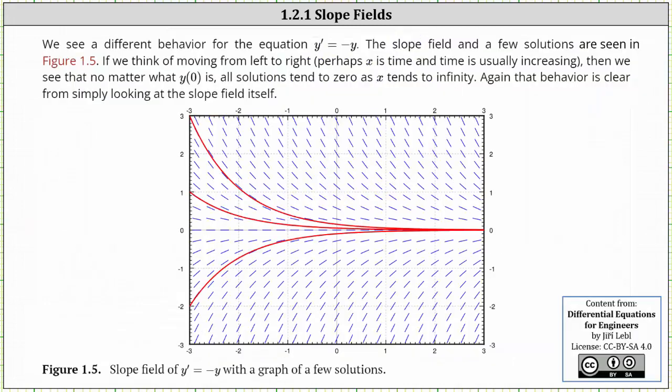We see a different behavior for the differential equation y prime equals negative y. The slope field and a few solutions are seen in figure 1.5 below. If we think of moving from left to right — perhaps x is time and time is usually increasing — then we see that no matter what y of zero is, all solutions tend to zero, or approach zero as x approaches infinity. That behavior is clear from simply looking at the slope field itself and how it behaves.